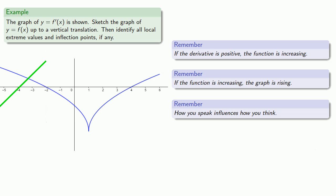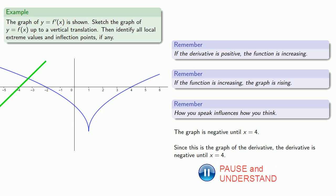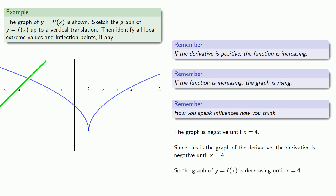We see that the graph of f prime is negative until x equals 4. Since this is a graph of the derivative, that means that the derivative is negative until x equals 4. So when we go to the graph of y equals f of x, derivative negative means the graph is decreasing until x equals 4. Let's draw a reference line through x equals 4, and we'll continue our graph dropping until we hit the line. We no longer need the guideline.